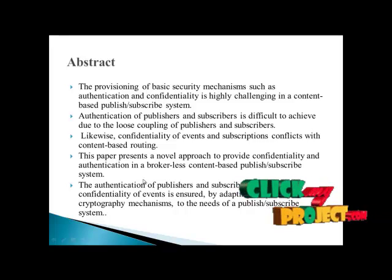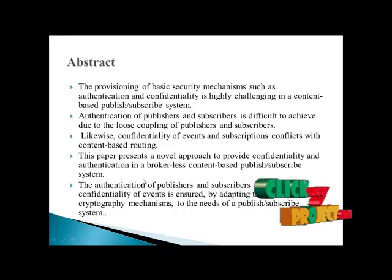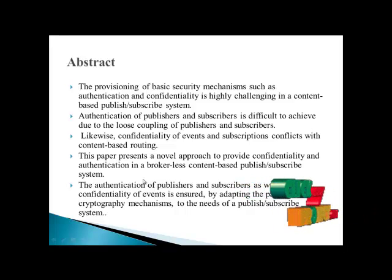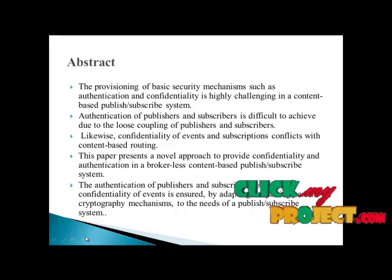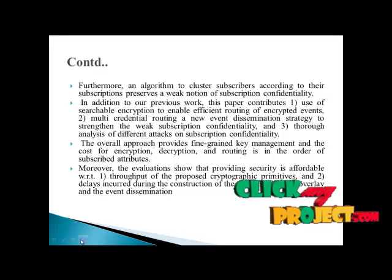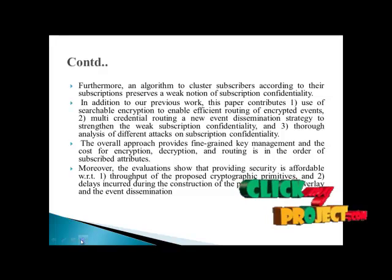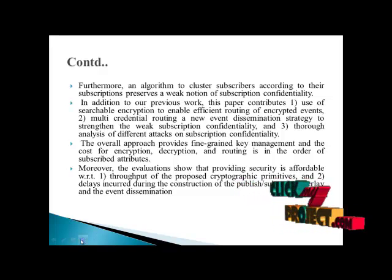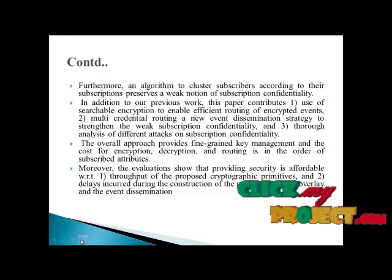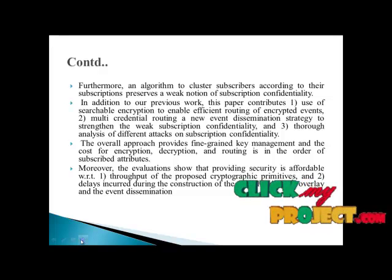In this paper, we present a novel approach to provide confidentiality and authentication in a brokerless content-based publish or subscribe system. Authentication of publishers and subscribers, as well as confidentiality of publishers, is ensured by adopting pairing-based cryptography mechanisms to the needs of a publish and subscribe system. Furthermore, an algorithm to classify subscribers according to their subscriptions results in a weak notion of subscription confidentiality. Our contribution is mainly classified into three procedures: use of searchable encryption to enable efficient routing of encrypted events; multi-credential routing and new event dissemination strategies to prevent accidental leaking of subscription confidentiality; and thorough analysis of different attacks on subscription confidentiality.